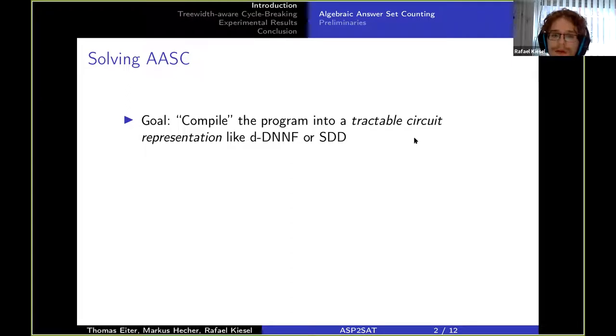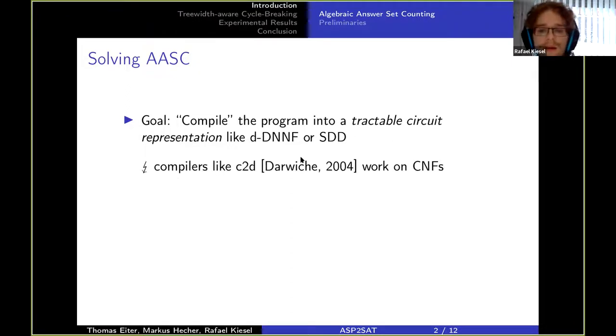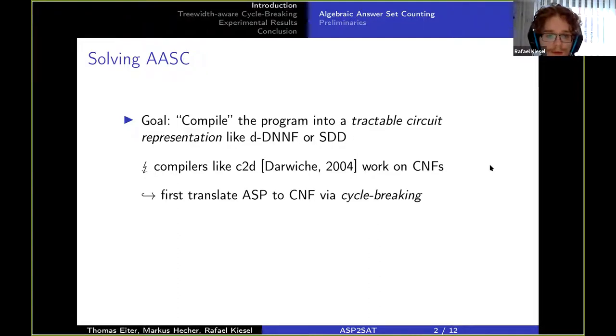Now there's a problem: compilers like c2d work on CNFs rather than answer programs. So what we do is we first translate ASP to CNFs via some form of cycle breaking.